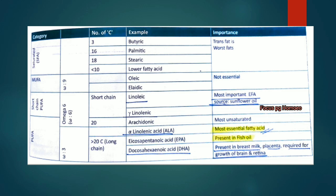Short-chain polyunsaturated fatty acids include linoleic and delta-linolenic acids, which are essential fatty acids sourced from sunflower oil. Arachidonic acid is also a polyunsaturated fatty acid. Linoleic acid is the most essential fatty acid. EPA is present in fish oil. DHA (docosahexaenoic acid) is present in breast milk and placenta, required for brain and retina growth.